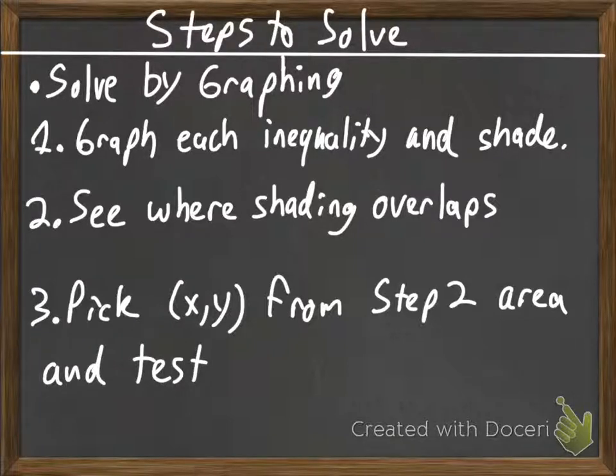Now, to verify that we did our graphing and our shading right, what we're going to do is pick a point from inside that shaded area and test it in all the inequalities to see if it's true. So we graph it, we shade it, we look to see where the shading is the same, and we test to make sure that we did the first two steps right.